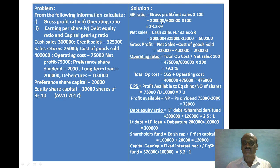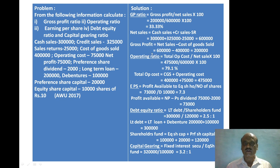Applying the gross profit ratio formula: gross profit Rs. 2 lakh divided by net sales Rs. 6 lakh into 100 = 33.33%. This is the gross profit ratio.